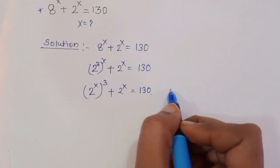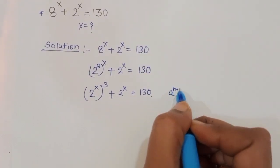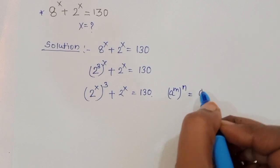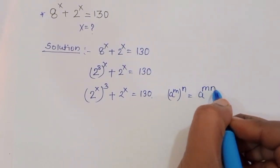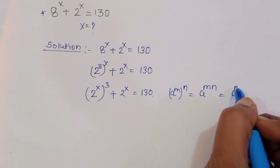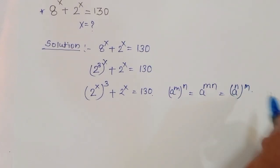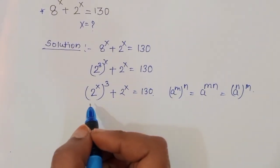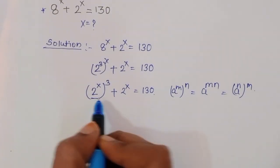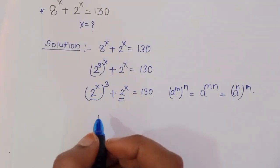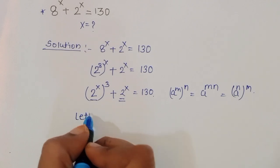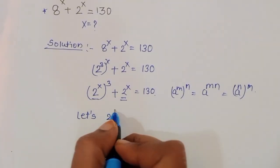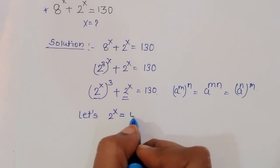Because we know the formula: a power m power n is equal to a power mn, which is equal to a power n power m. Now, we see that 2 power x appears in both terms. So let's consider 2 power x is equal to y.